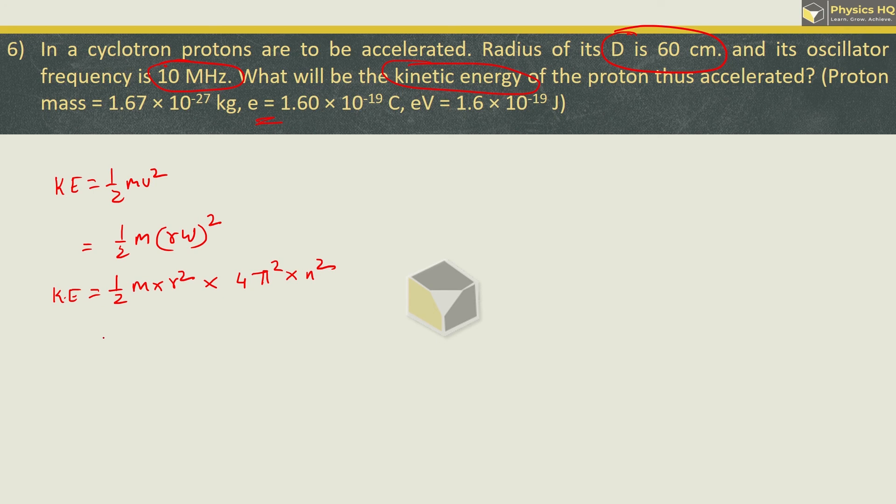So this is the formula for kinetic energy. Let us put the values: mass is 1.67 × 10⁻²⁷, radius is 60 cm which is 0.6 meter. We can write 2 times π² which is 3.142² into the frequency squared. Frequency is 10 megahertz, mega is 10⁶, so 10⁷. We need its square.